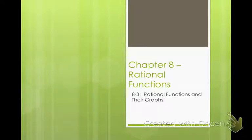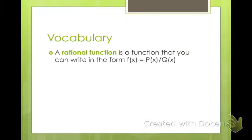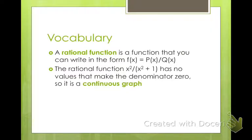This section is all about rational functions and their graphs. A rational function is a function you can write in any form where it's one function divided by another function, as long as they're both functions. The rational function x squared divided by x squared plus 1 has no values that make the denominator 0, because we can't make x squared be negative 1. So it's a continuous graph — there are no parts on the graph where anything is missing.